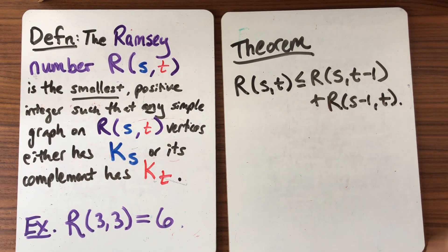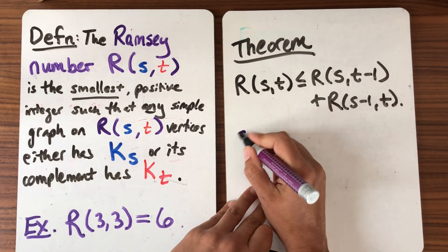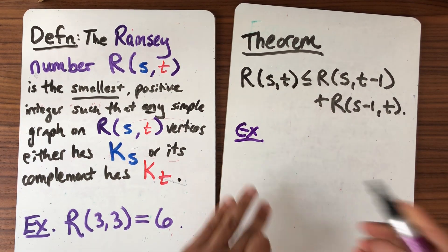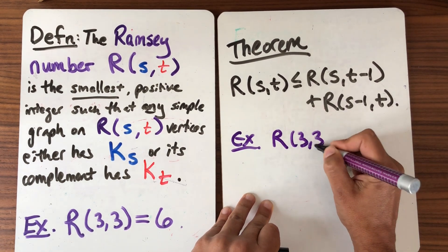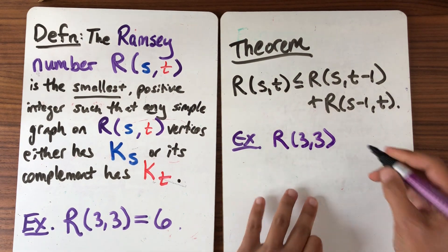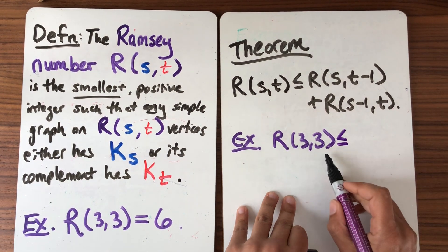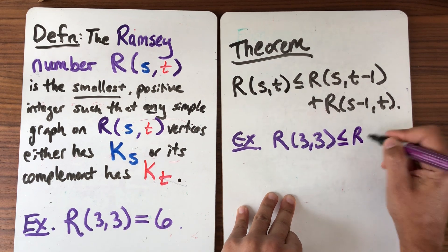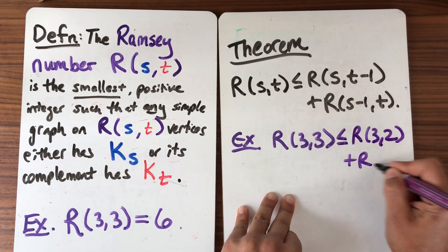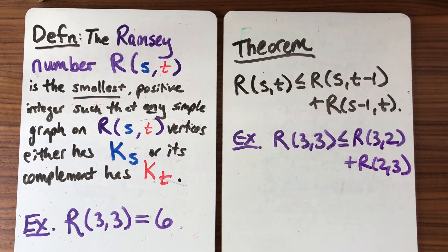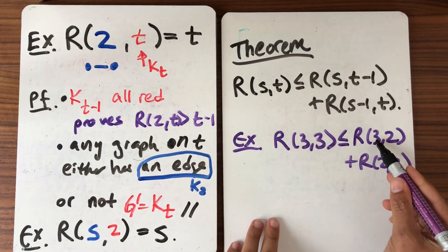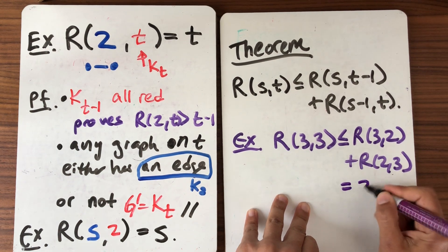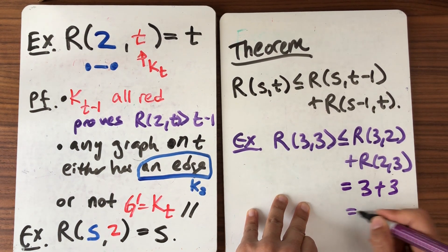Let's look at an example based on what we've just shown. So let's use this bound to think about what is R(3,3). Well we know it's 6 because we worked that out last time but what does the bound tell us? It tells us the R(3,3) is at most R(3,2) plus R(2,3). And we just work those out. We worked out exactly what those are in the previous examples. We know that this one is going to be 3 and this one is already 3. So this is equal to 3 plus 3 which is equal to 6.